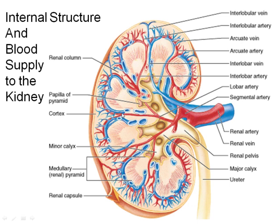Urine formed in the nephron drips down through the renal tubules into the renal pelvis — the hollow space in the kidney — and then drains into the ureter. Because the kidneys are a filtration system, they need a good blood supply. Filtration runs because of hydrostatic pressure, so blood pressure is an important feature of kidney function. About a quarter of your cardiac output travels to the kidney, making it a highly vascular area.